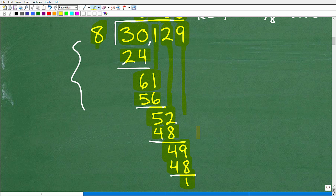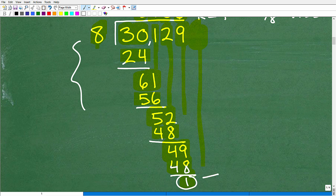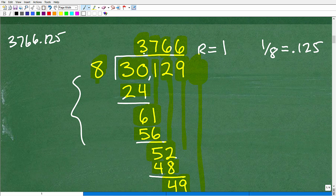When I subtract, I get 1. Can 8 go into 1? Nope. Is there any more digits to drop down? Nope, there isn't. So that's it. So this is my answer, 3,766, but I have this remainder. This is 1 remaining. So you probably wrote your answer this way, 3,766, remainder 1, or you could write it as 3,766, 1 over 8. You could write it this way as well.